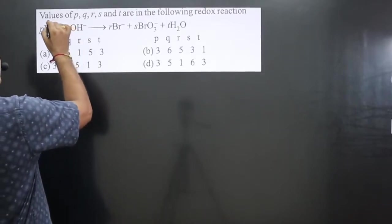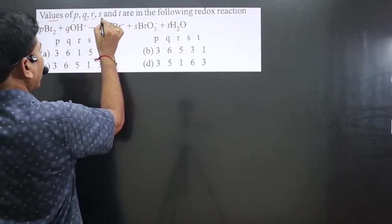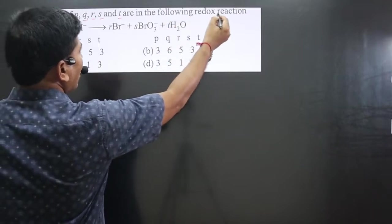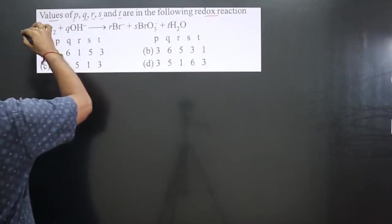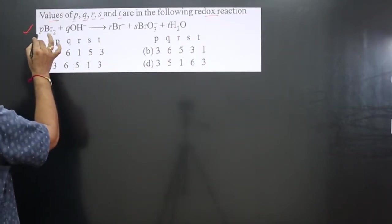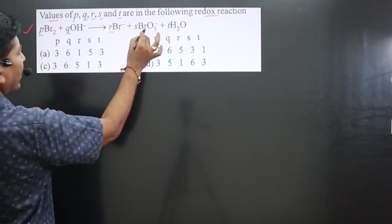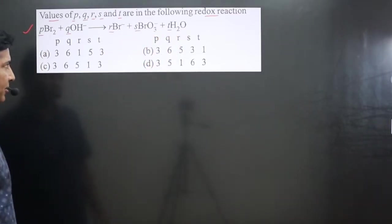The question says: find the values of P, Q, R, S, and T in the following redox reaction. A redox reaction is given here in which you can see P, Q, R, S, T are the coefficients to be determined.